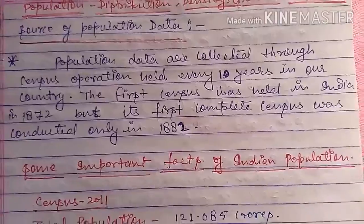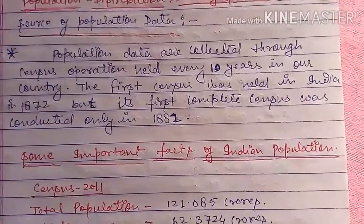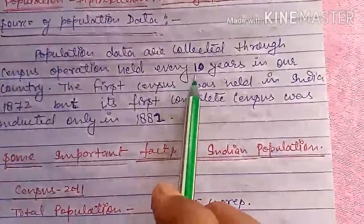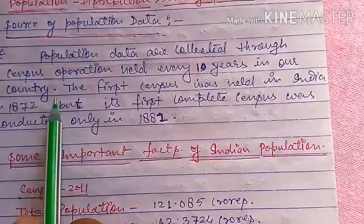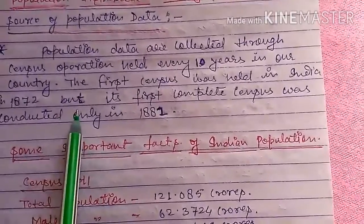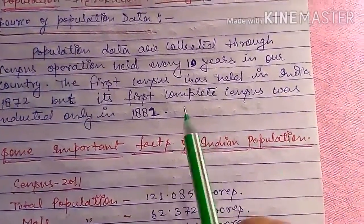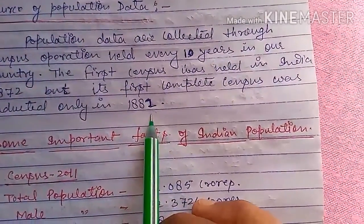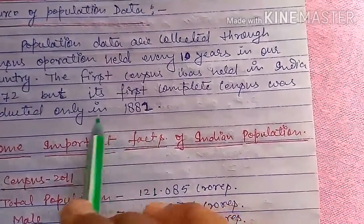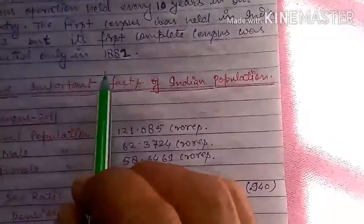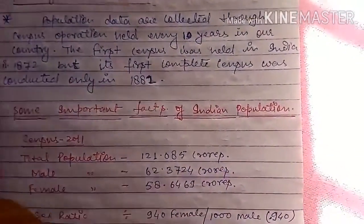Population data are collected through census. The census operation is held every 10 years in our country. The first census was held in India in 1872, but the first complete census was conducted in 1881.